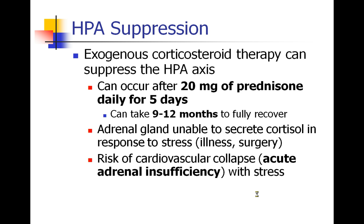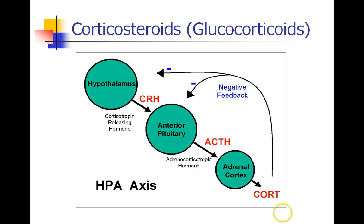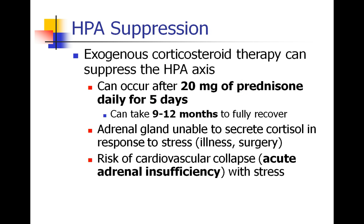If a patient is given 20 mg of prednisone daily for just five days, this can suppress the HPA axis. Due to all of the negative feedback coming from the exogenous steroid, the axis will turn off this pathway, and the adrenal cortex will have reduced secretion of cortisol. This can be a problem in cases of stress. When the patient undergoes surgery or becomes ill, they may be unable to secrete enough cortisol to respond to that stress, and this would lead to cardiovascular collapse, which we would say is due to acute adrenal insufficiency or an Addisonian crisis. This can occur with stress after just five days of prednisone at 20 mg, and it can take up to a year to fully recover from this suppression.